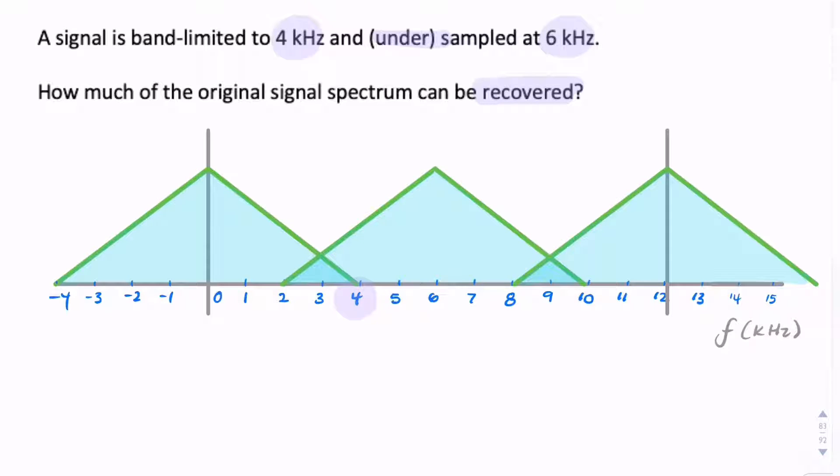Let me just clean that up. So these are our replicas. And these exist as a result of sampling. Nothing to do with the aliasing. So where's the aliasing? The aliasing is happening here. In the overlap. That's the aliasing.